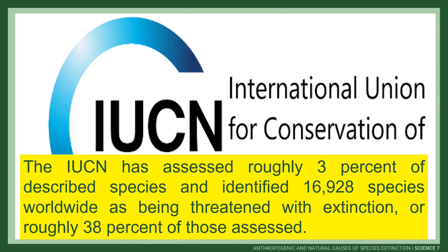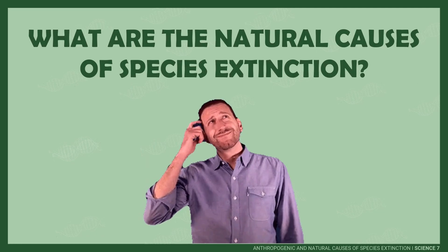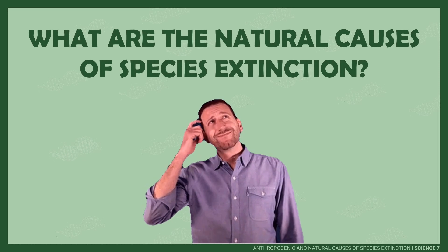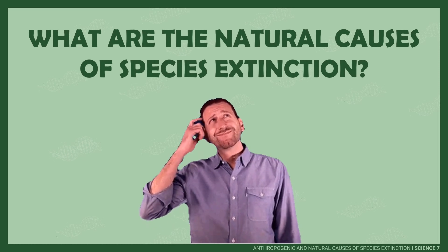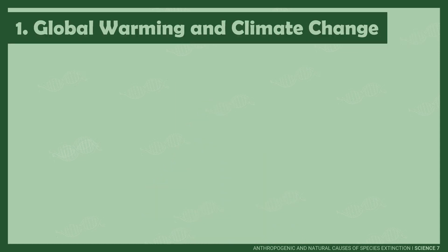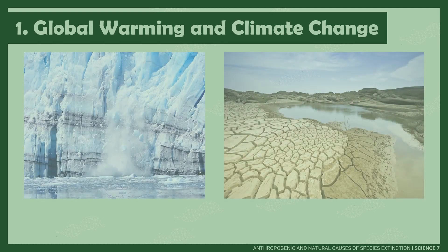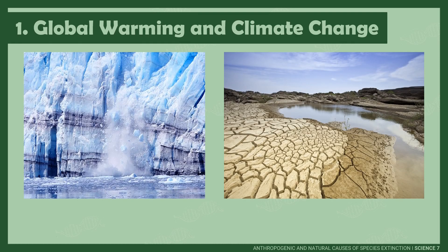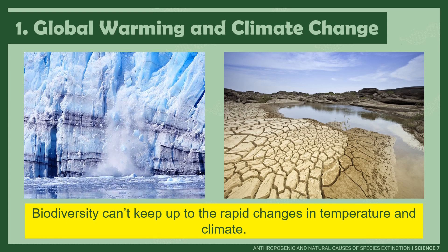Some factors resulted in the extinction of species in mankind. It can either be natural or anthropogenic, or man-made. Let us first identify the major natural causes of extinction. First on the list is global warming and climate change. Global warming is the long-term increase in the Earth's surface temperature due to the high amount of greenhouse gases that are trapped in the atmosphere. Climate change is the long-term change in the average weather pattern that has come to define Earth's local, regional, and global climates. Climate change is induced by global warming.